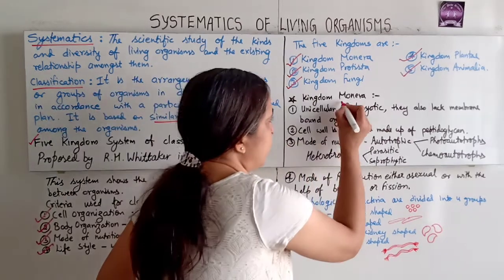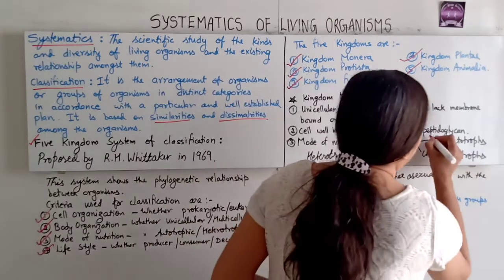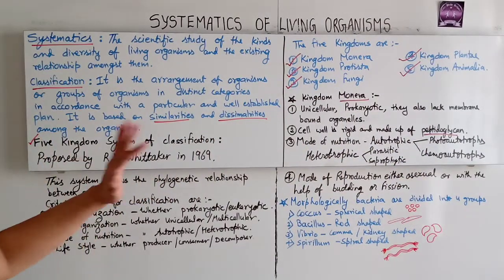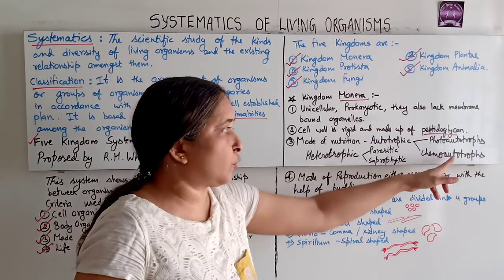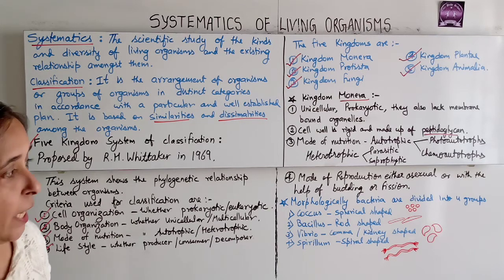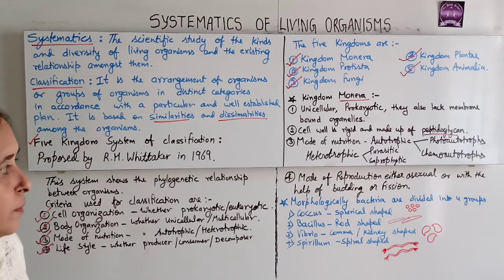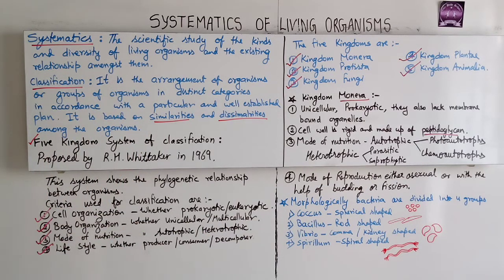The first is Kingdom Monera. These are unicellular and prokaryotic. They lack membrane-bound organelles. The cell wall is rigid and made up of peptidoglycan. Mode of nutrition is autotrophic or heterotrophic. Among autotrophs, there are photo-heterotrophs, which get energy from light, and chemo-heterotrophs, which get energy from chemical reactions. Heterotrophic forms may be parasitic or saprophytic.